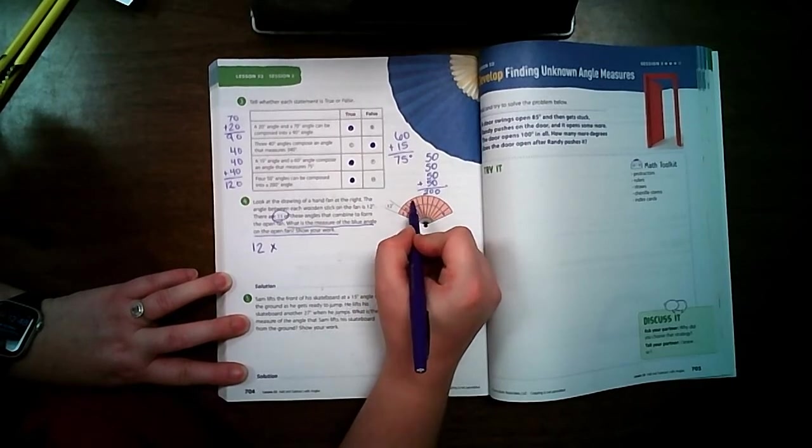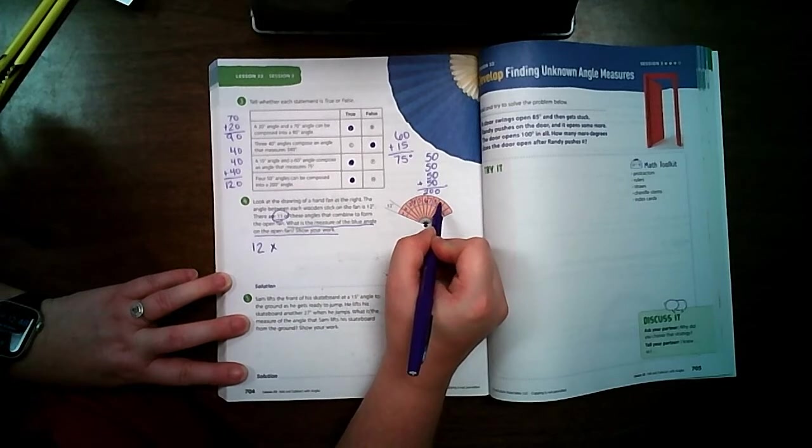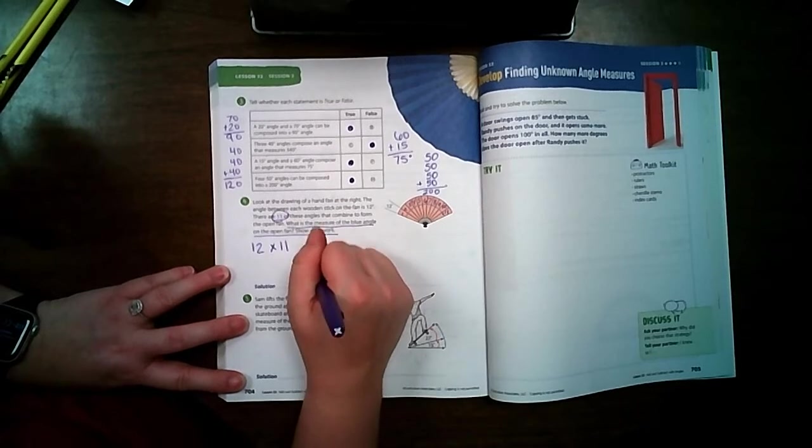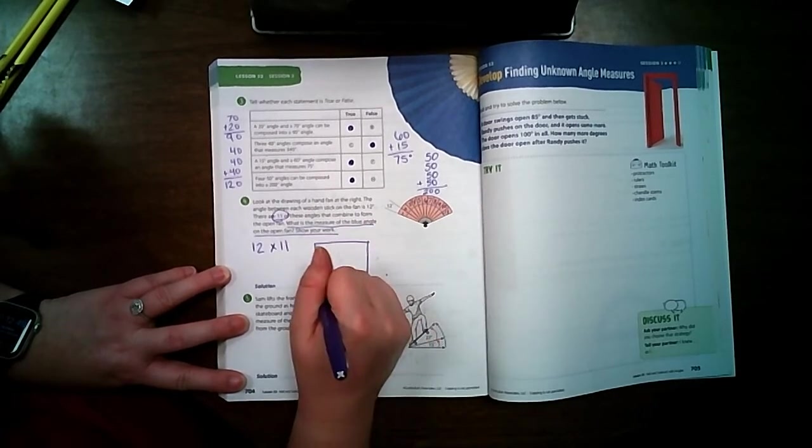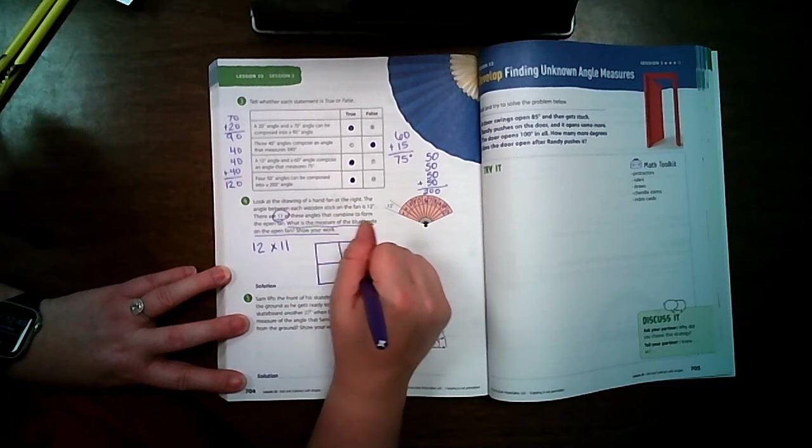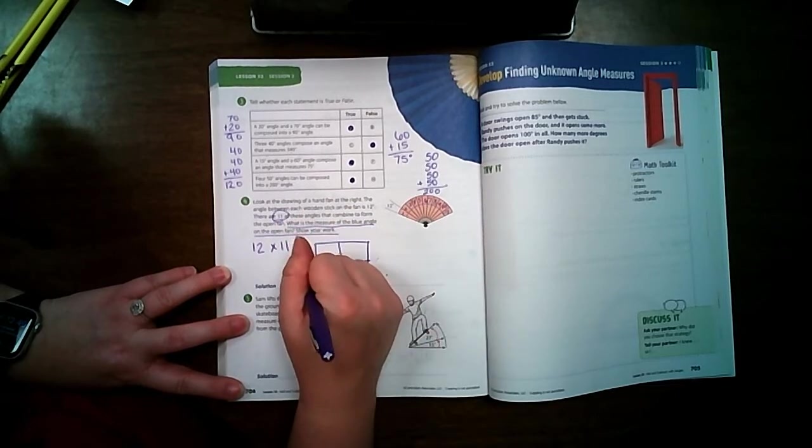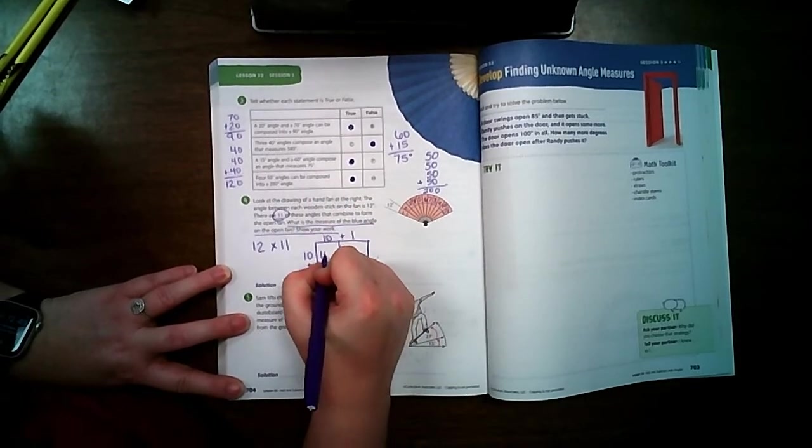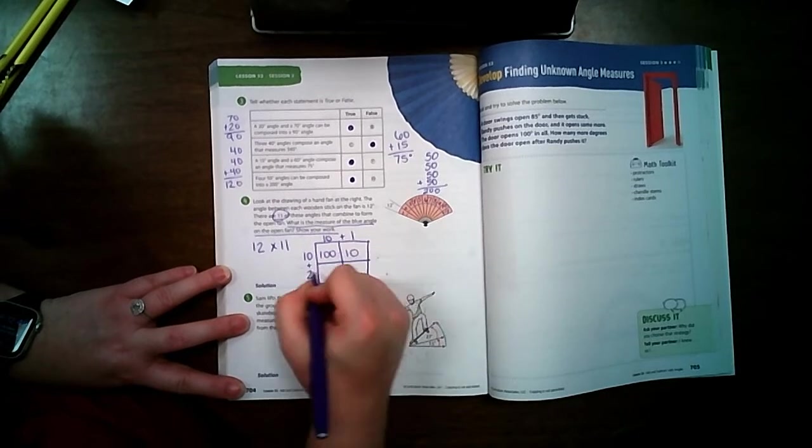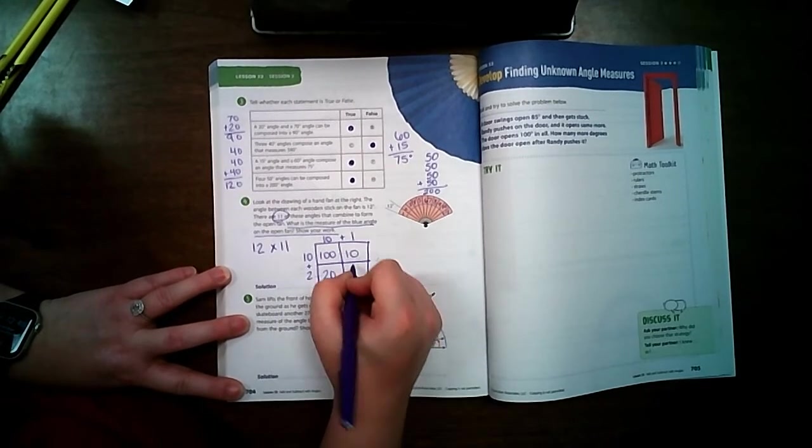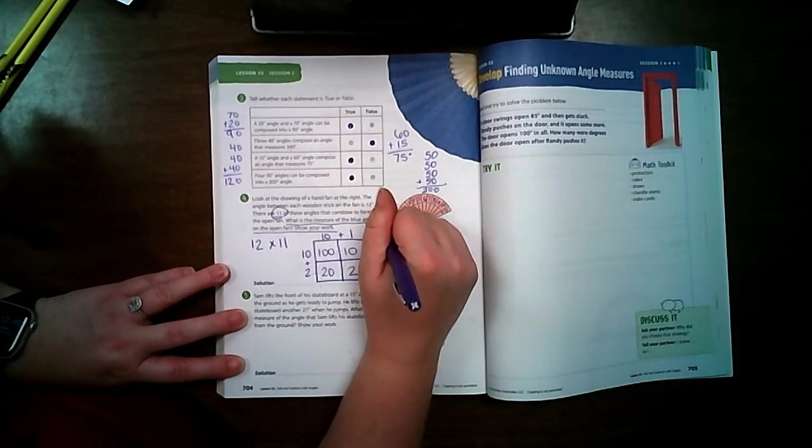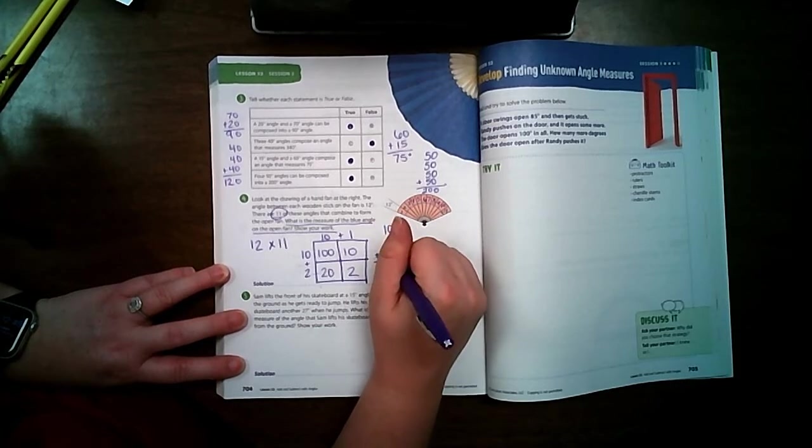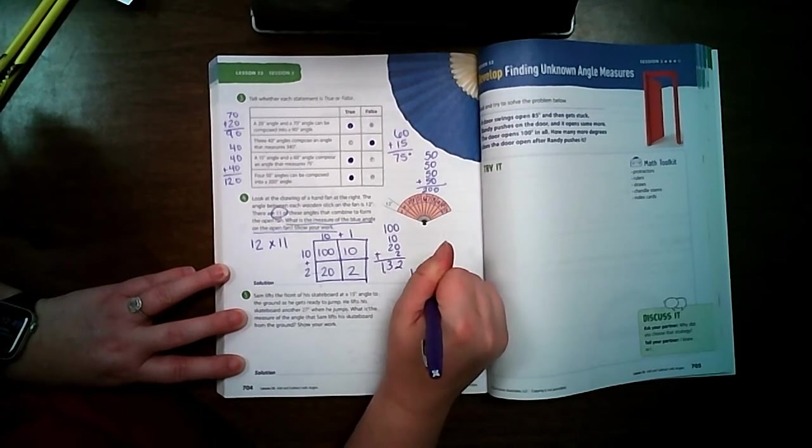1, 2, 3, 4, 5, 6, 7, 8, 9, 10, 11. That is going to take a long time to do 10 times 11, so I am actually going to draw an area model. 10 times 10 is 100. 10 times 1 is 10. 10 times 2 is 20. 2 times 1 is 2. I am going to add all this together. And my answer is 132 degrees.